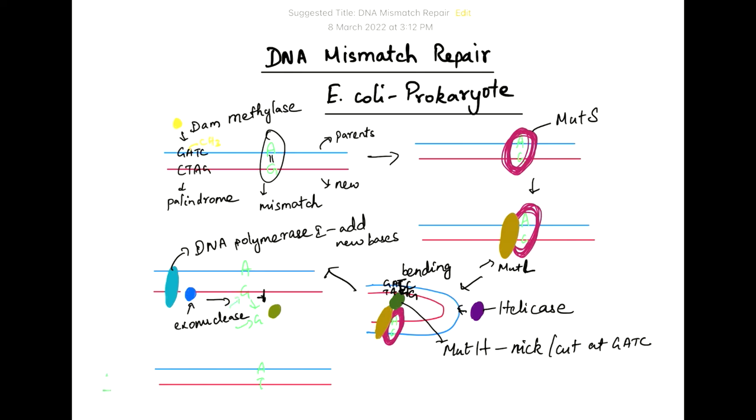And the T base, which is the complementary base for adenine, is added by the DNA polymerase at the mismatch. And so it will finally result in the presence of a nick or a gap in the DNA strand, new strand.